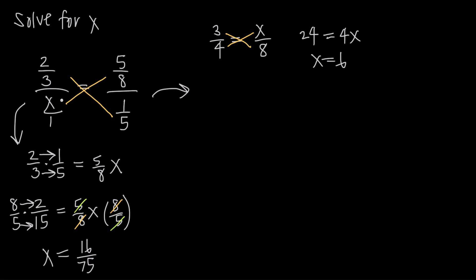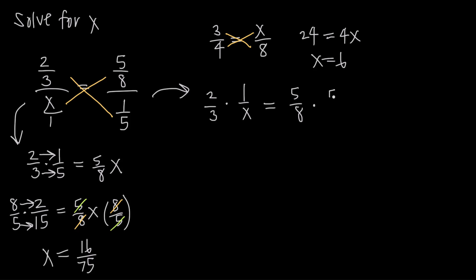We know from fraction division that dividing by a fraction is really just fraction multiplication — all we do is take the reciprocal of the denominator. So instead of dividing 2 thirds by x over 1, we multiply 2 thirds by 1 over x. We can do the same thing on the right-hand side: instead of dividing by 1 fifth, we multiply 5 eighths by the reciprocal, which is 5 over 1.